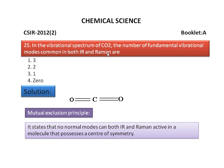In this question, the number of fundamental vibrational modes common in both IR and Raman active are asked. So, there are no normal modes that can be both IR and Raman active in a carbon dioxide molecule that possesses a center of symmetry. According to the mutual exclusion principle, the answer is 0 — that is, the fourth option is the correct one.